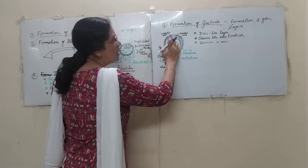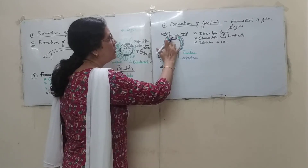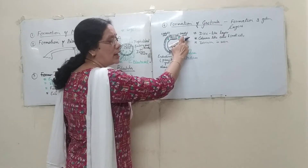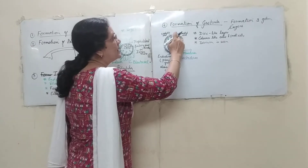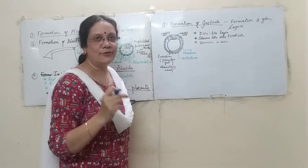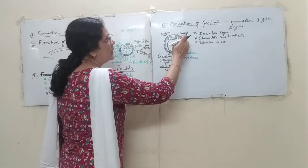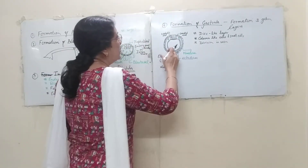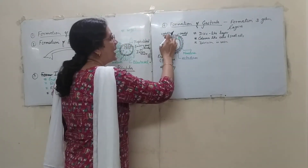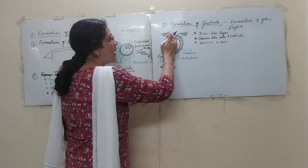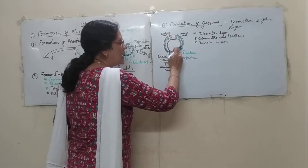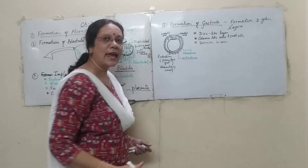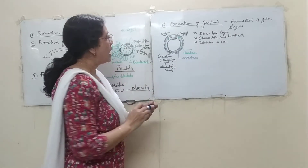The columnar cells have two ends: one is called the cephalic end and the other is the caudal end. The cells towards the caudal end divided to form the mesodermal layer. The cells towards the cephalic end divided to form another ring-like layer known as the ectodermal layer.